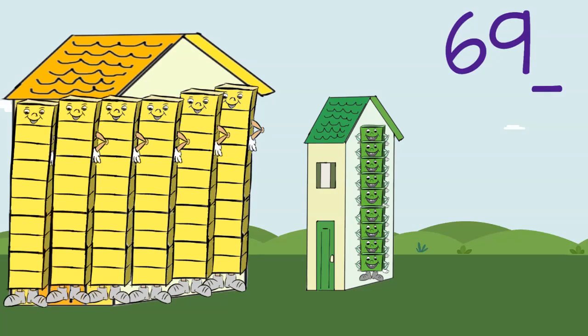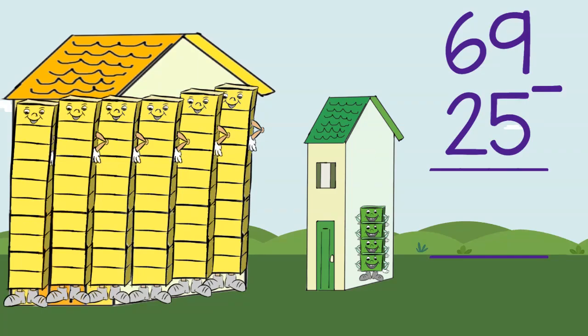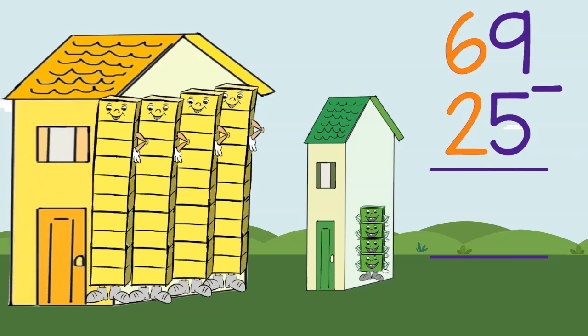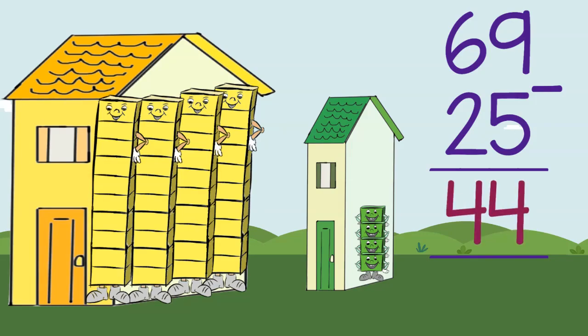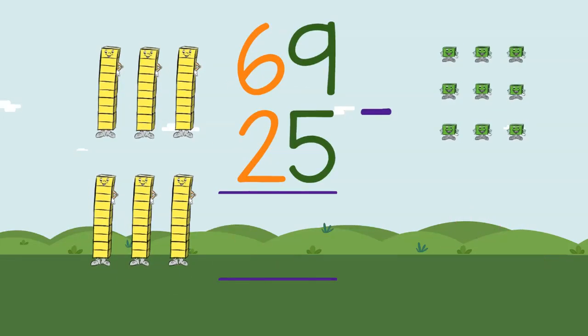69 take away 25. You cross out five ones and you are left with four ones. Take out two groups of tens and you are left with four tens. The number that amazingly appears is 44. This is what we did.